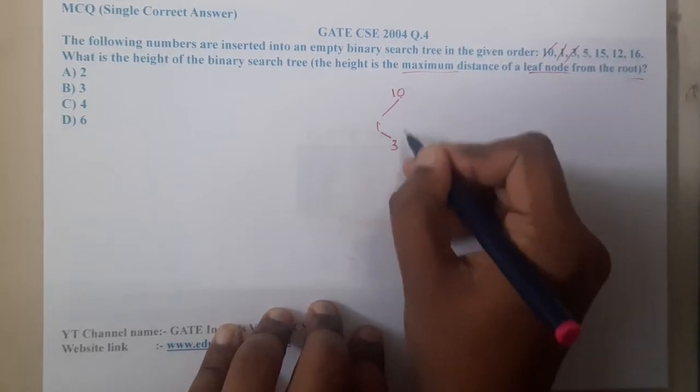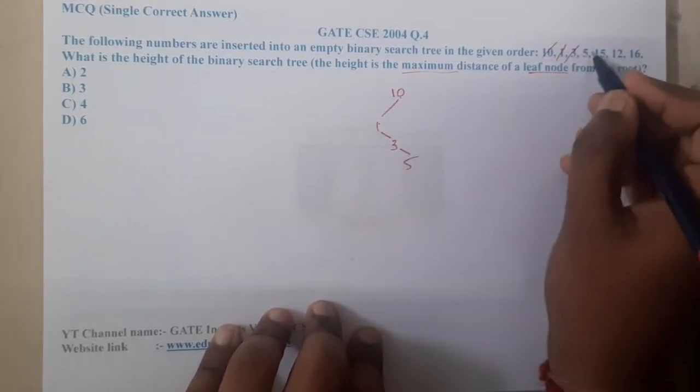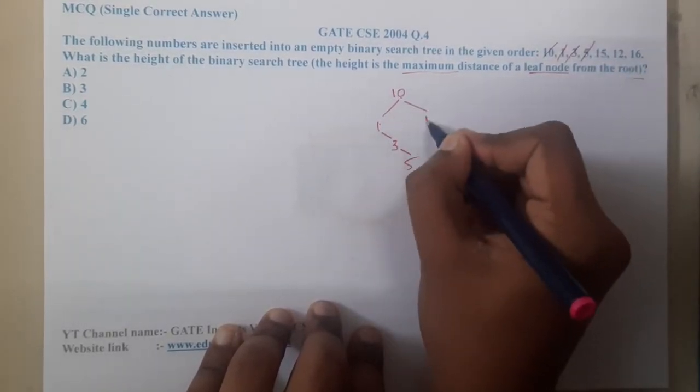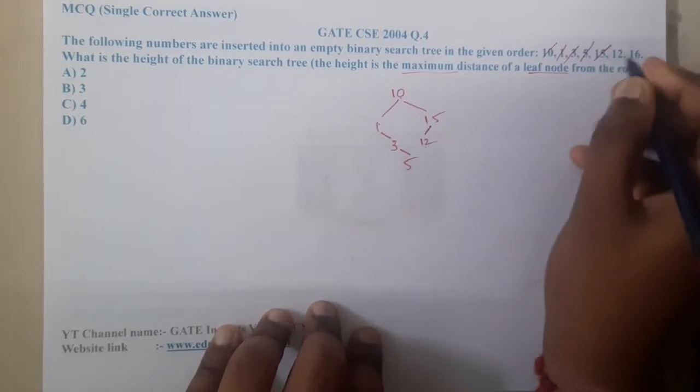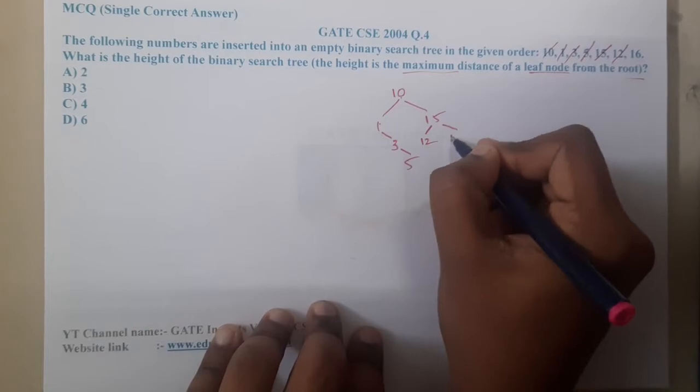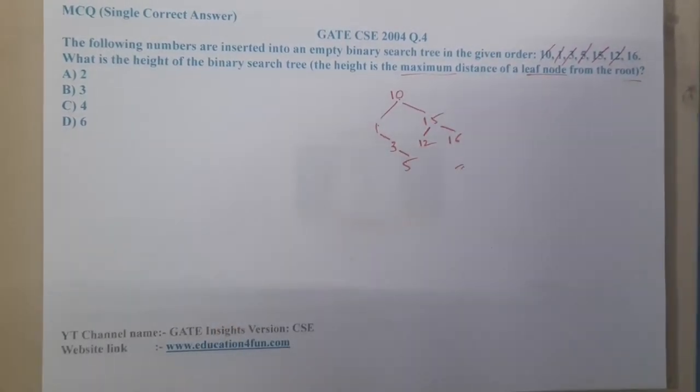Similarly, 5 is greater than 3, right? 15 is greater than 10. 12 is lesser than 15. 16 is greater. So basically, the normal binary search tree we are applying. I think everyone watched our series right, so in that we discussed each and every topic in detail.